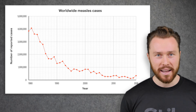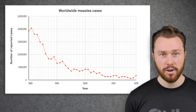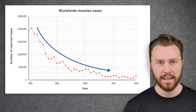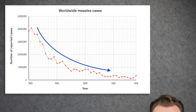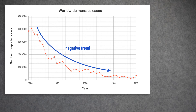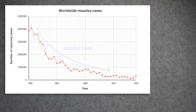If we step back and look for patterns in the graph, we can see that overall, the number of measles cases decreased in this time period. An overall decreasing pattern in a line graph is called a negative trend. We can also see that the number of cases increased from 2016 to 2018 — this increasing pattern is called a positive trend. Other small sections of the graph have positive trends too, even though the overall trend is negative.